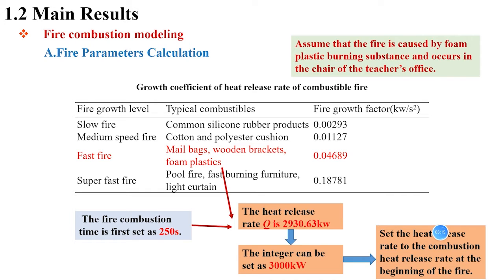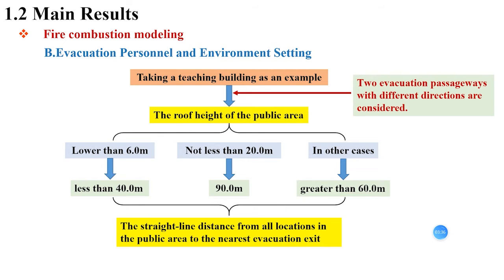In order to simulate the real fire evacuation, the fire combustion time is first set as 250 seconds. Here we set the heat release rate to the combustion heat release rate at the beginning of the fire. Taking a teaching building as an example, two evacuation passageways with different directions are considered according to the relevant design specifications.